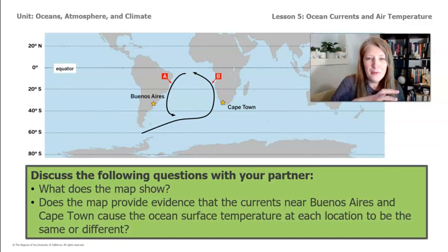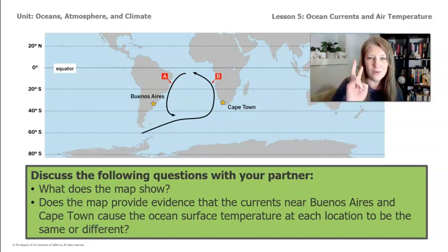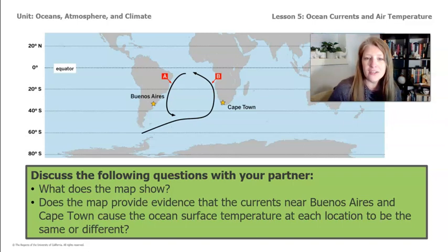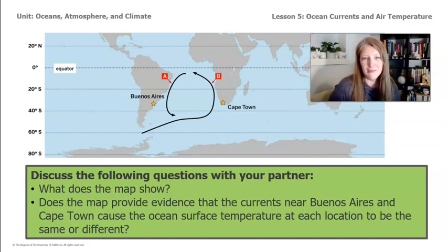I'd like you to either discuss with your partner or take a moment to think about what you're seeing here. Two questions: one, what does the map show? And two, how does the map provide evidence that the currents near Buenos Aires and Cape Town caused the ocean surface temperature at each location to be the same or different? Pause the video, jot down some ideas, and if you have a partner, tell them what you're thinking.